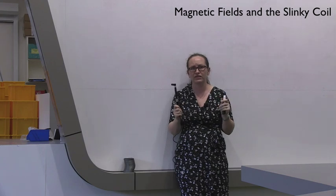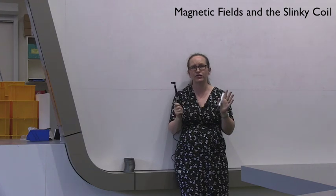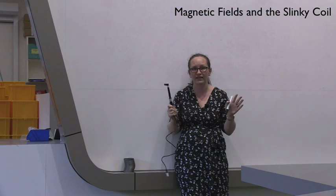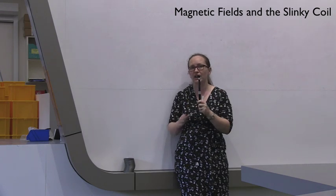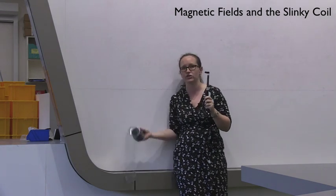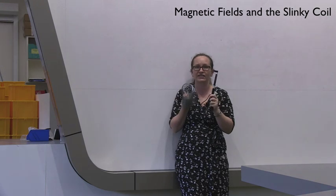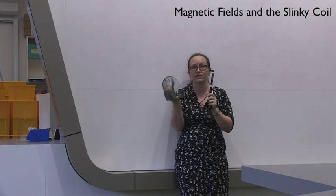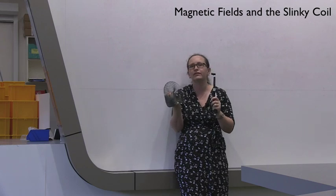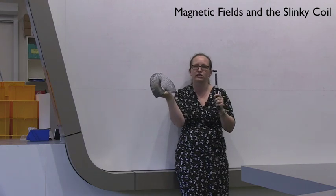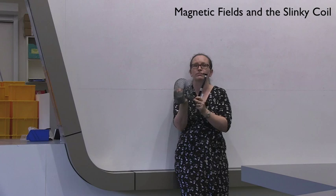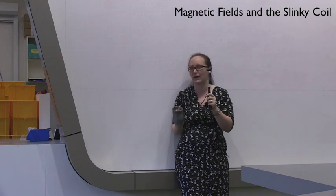So there's three parts to this experiment. In the first part, you'll be measuring the Earth's magnetic field. In the second part, you're going to be investigating a solenoid and the various factors that affect the magnetic field strength inside the solenoid. And then in the third part, you'll be using the slinky as a solenoid to get a measurement of mu naught, the permeability of free space.